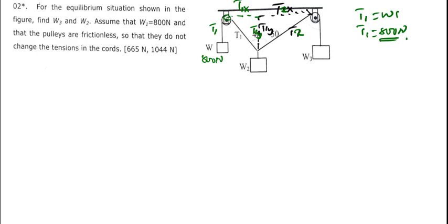And we already know that this is T1 and we have been given this is 800. So we know that T1 is equal to W1, so T1 is also 800N. At the same time we should also take note that this is T2 and then we have W3.